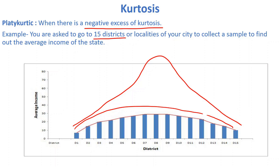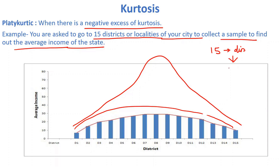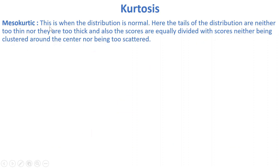For example, if you are asked to go to 15 districts of your city to collect a sample and find out the average income of the state, and you select samples of around 100 people in each district, you will find that the average income in each district is almost the same. Going from the first district to the second, you get almost the same values, resulting in a flattened curve. This type of distribution is called platykurtic.